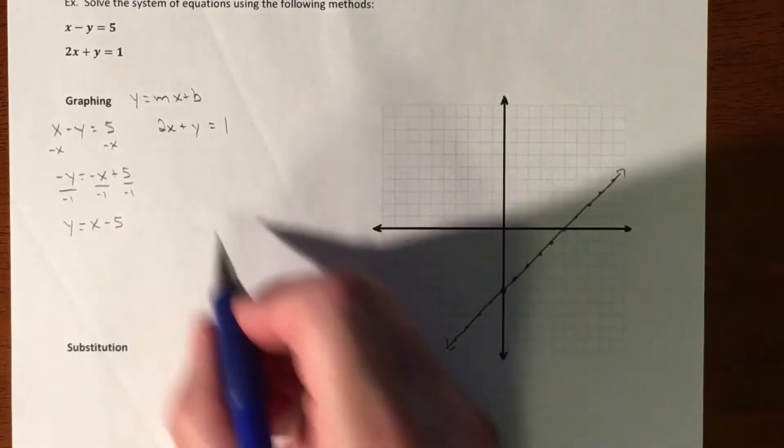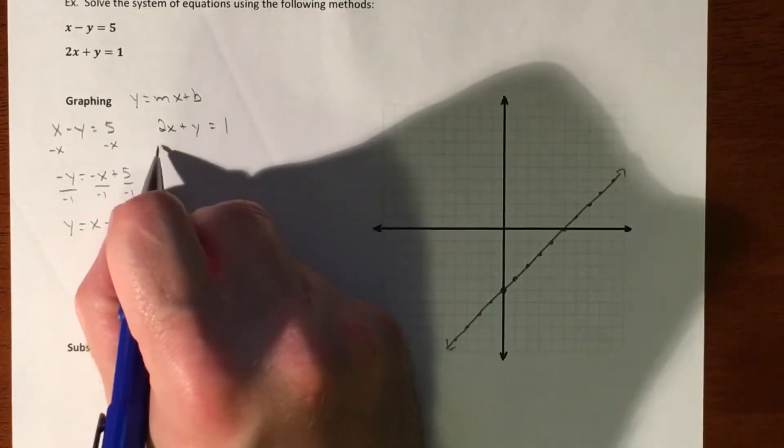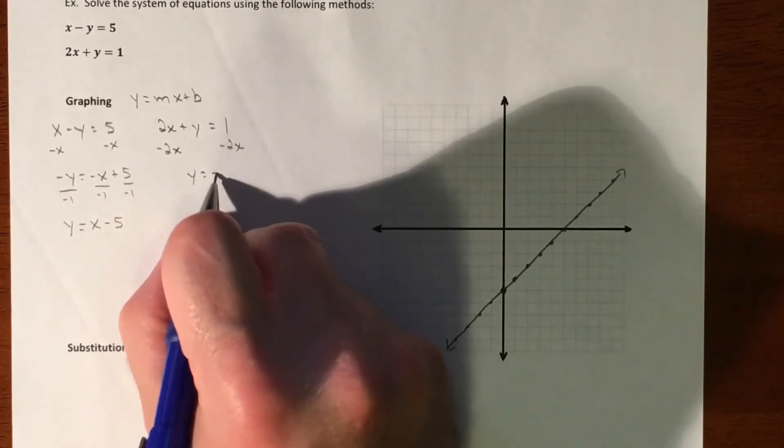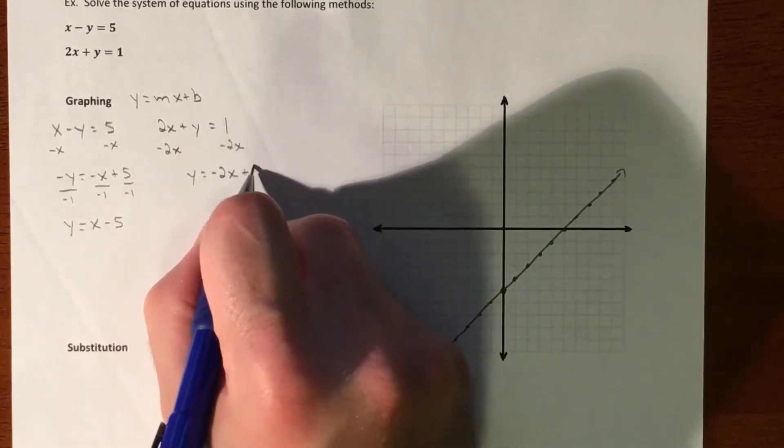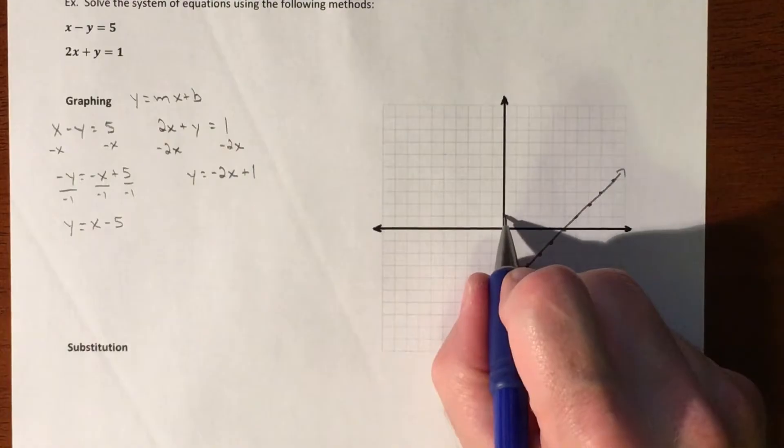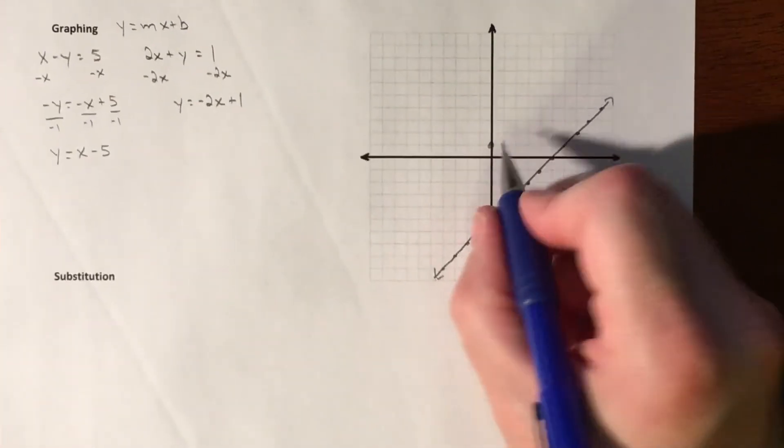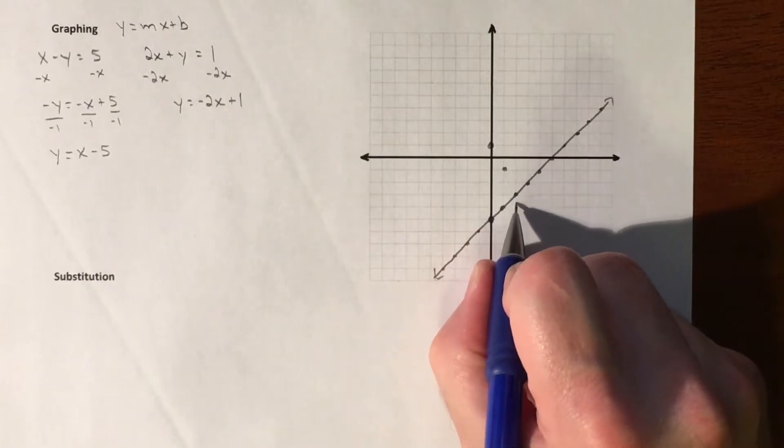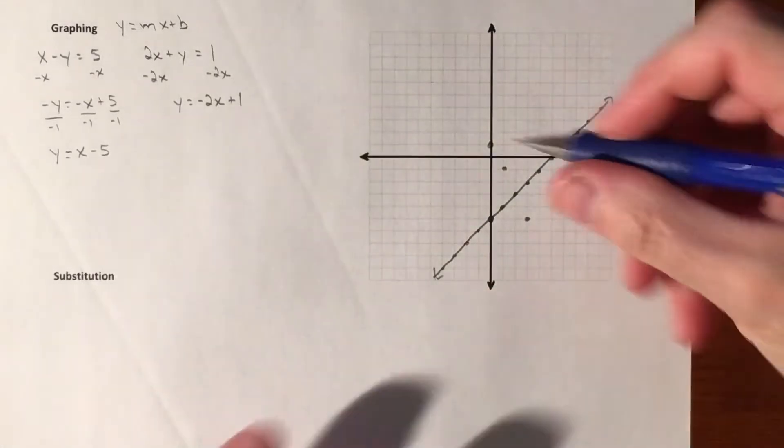And then our second graph, we've got to get this thing ready to graph. So we're going to subtract the 2x over to the other side. So y equals negative 2x plus 1. So y-intercept of 1. And we're going to go down 2 over 1, down 2 over 1. Okay, so we've already crossed.